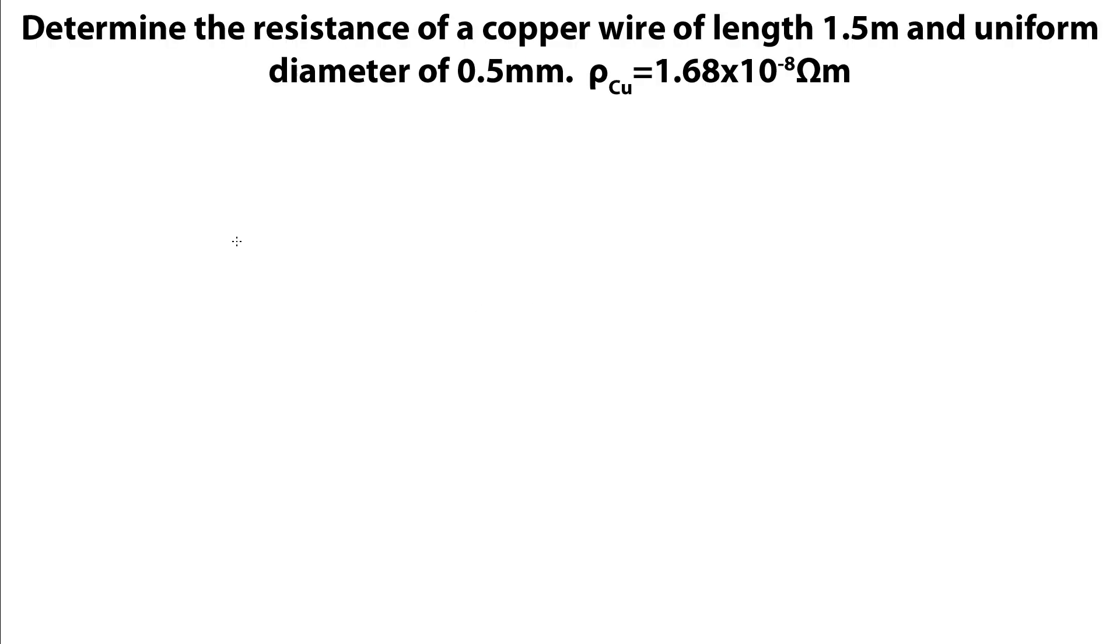And now we can have a quick look at an example. So here the question we're told, determine the resistance of a copper wire of length 1.5 meters, uniform diameter, given that this is the resistivity of the copper. So if we have a look at the equation we just had up. We start from rho equals RA over L. So this question asks for the resistance. So we're going to have to rearrange this. And we get R is rho L over A. OK, so now we just need to, this rho we're given here, and that can come in here.